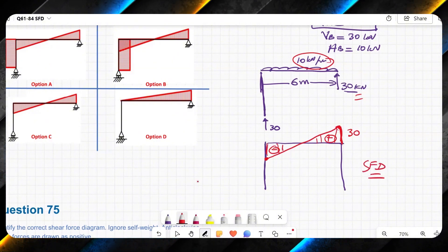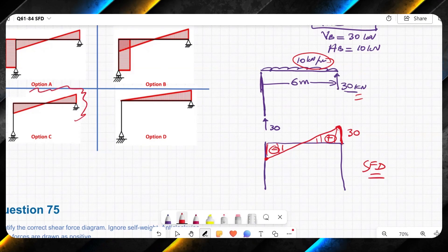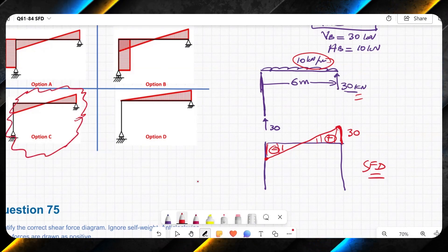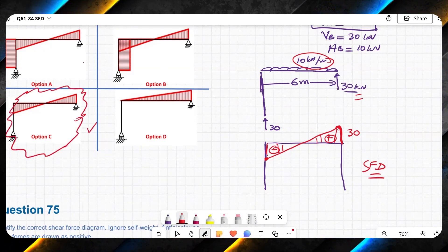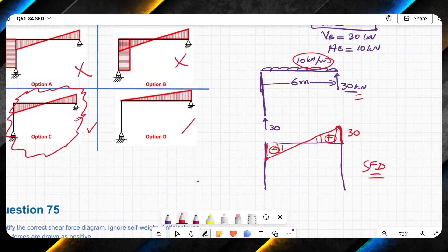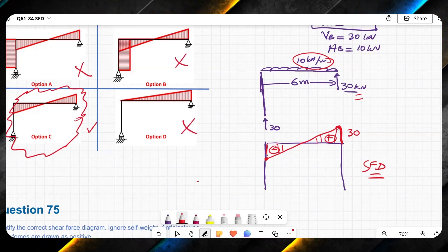This means that option C is the correct option. All other options are incorrect.